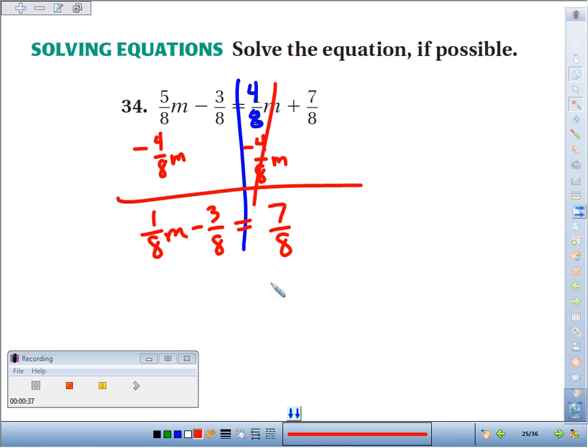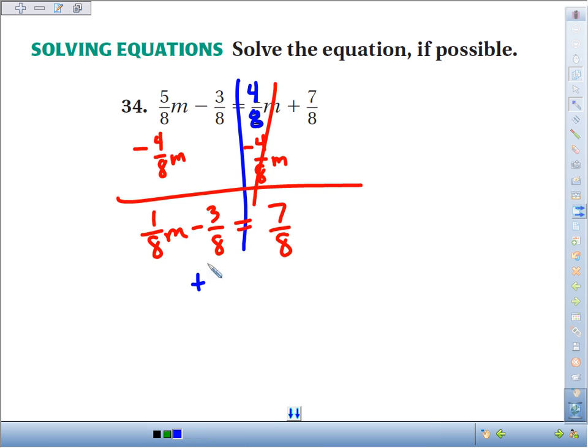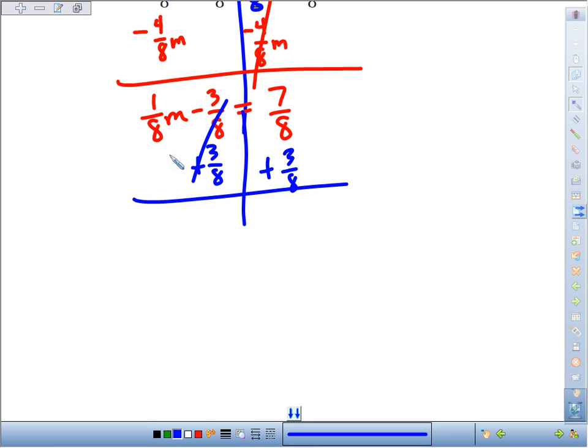We're down to a two-step equation now. To get rid of, peeling off the layers from the m, the furthest layer is this minus 3/8. So I'm going to add 3/8 to one side, but if I do it to one side, I have to do it to the other. After that step, these cancel. We have 1/8 m equals 7/8 plus 3/8. That would make 10/8.